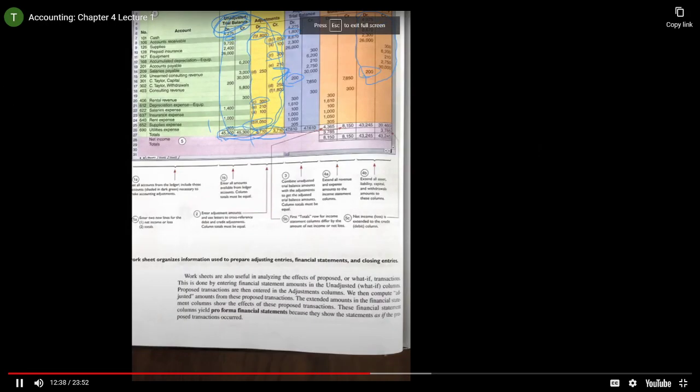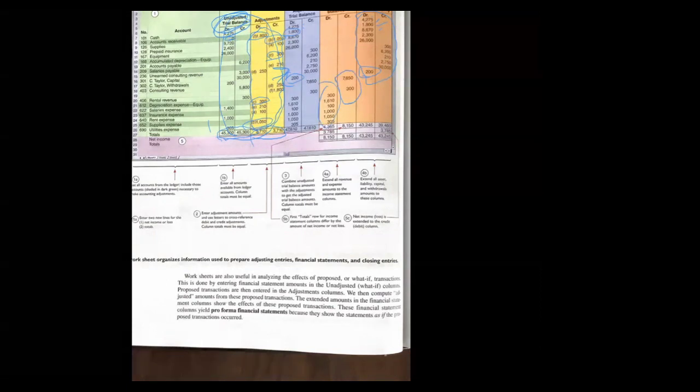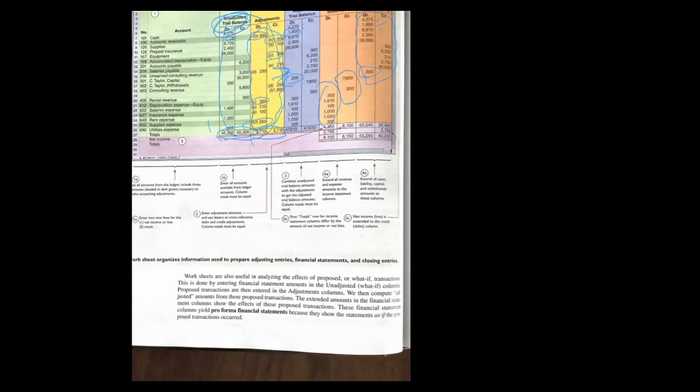Withdrawals do not belong on any income statement. Withdrawals are not considered expenses — that's the one thing you have to be careful with. When you get near the bottom, you'll notice the revenue accounts and all the expense accounts are all listed, and then you notice they total up all the columns. Here you get 4,365.